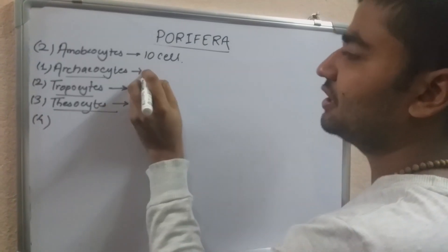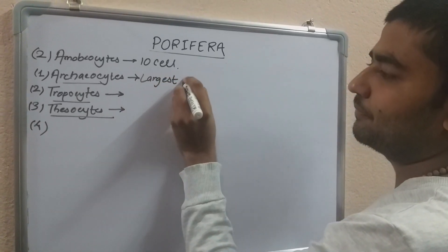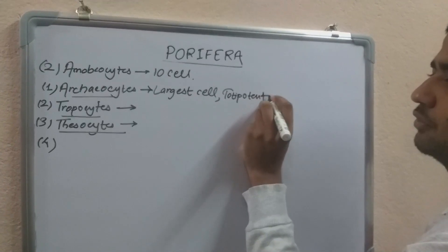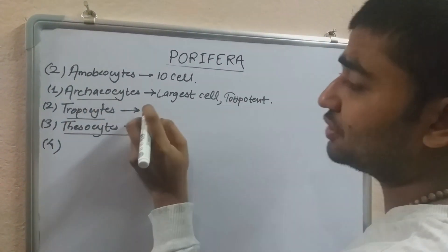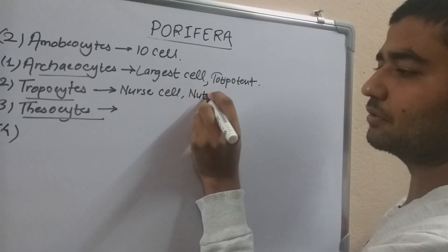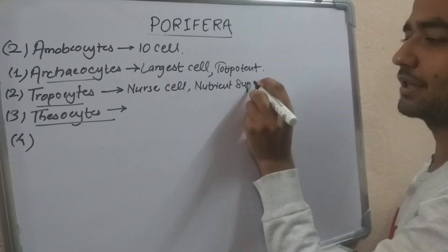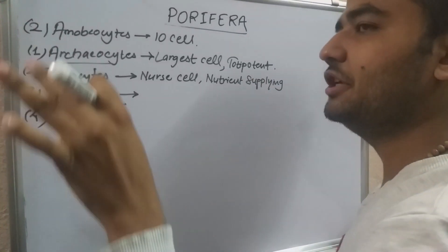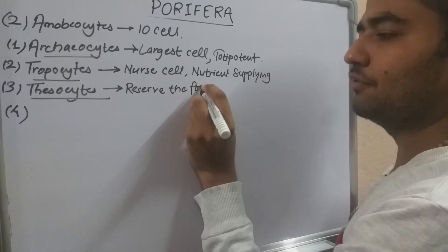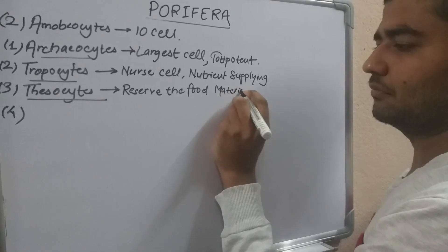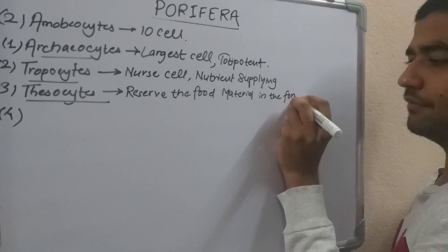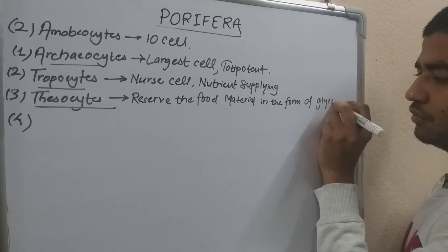Archeocytes are large in shape and totipotent. Thesocytes store food material — they are involved in nutrition supply, storing food in the form of glycogen.